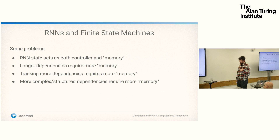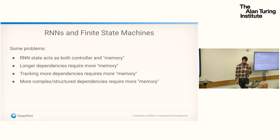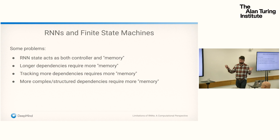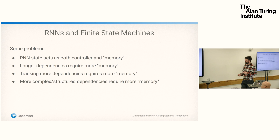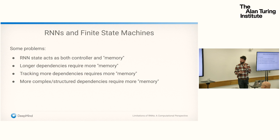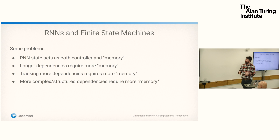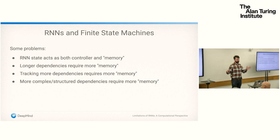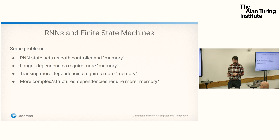You might say we seem to be doing pretty well empirically, so why is this a problem? First, if you're satisfied with bounded memory specified by the data, you'll still run into scalability problems. If the RNN state is acting both as the controller and the memory, it's a fixed information reservoir — unless you grow the hidden layer, which isn't simple. Longer dependencies require more memory, and capturing more arcing relationships means you'd need to almost exponentially scale your hidden layer. More complex structured dependencies require more memory, so it's not a very scalable proposition.